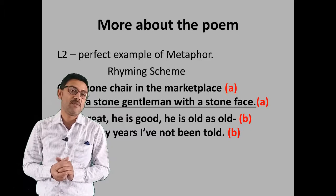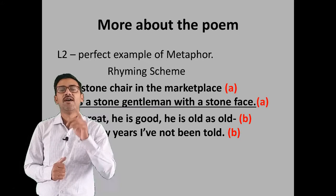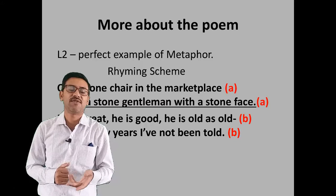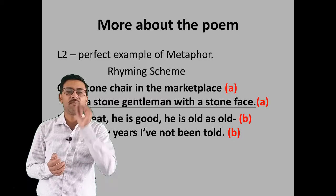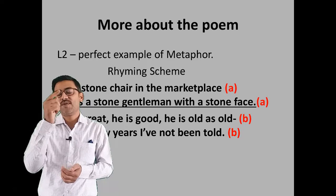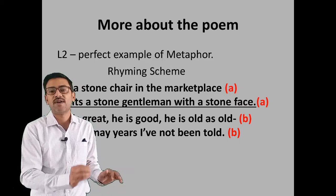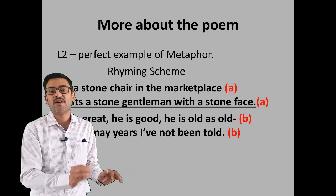Next, the rhyming scheme of the poem. Looking at the first four lines: the last words are 'marketplace' and 'face' — both rhyme, so we write AA. Then 'old' and 'told' rhyme, so we write BB. This pattern continues: whenever two consecutive lines share a rhyming last word, they get the same letter. If the rhyme changes, we move to the next letter — CC, DD, and so on. This is the AABB rhyming pattern of the whole poem.